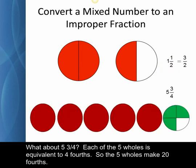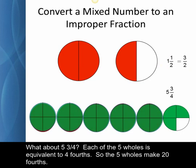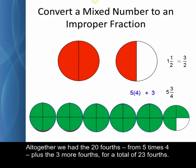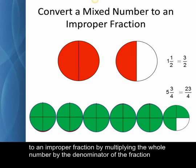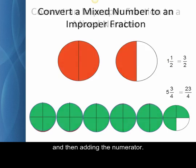What about five-and-three-fourths? Each of the five wholes is equivalent to four-fourths, so the five wholes make twenty-fourths. All together we have the twenty-fourths from five times four, plus the three more fourths for a total of twenty-three-fourths. This activity helps students make sense of the algorithm for converting from a mixed number to an improper fraction by multiplying the whole number by the denominator of the fraction and then adding the numerator.